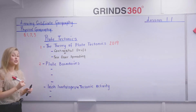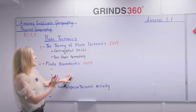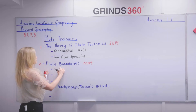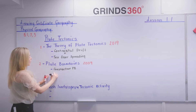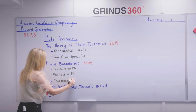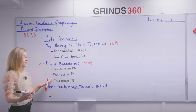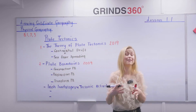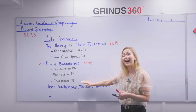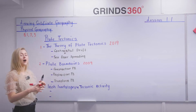Essay number two is plate boundaries, which last came up on its own in 2009. There are three different types of plate boundaries: constructive, destructive, and transform plate boundaries. Constructive can also be referred to as divergent; destructive as convergent; and transform as passive, conservative, or neutral. In 2009, the examiner asked you to discuss the different types and distribution of plate boundaries, covering all three types.